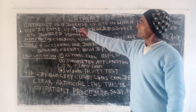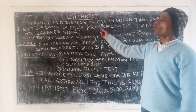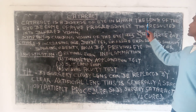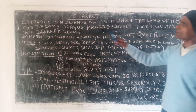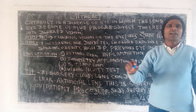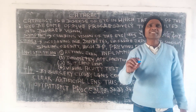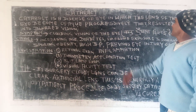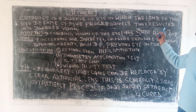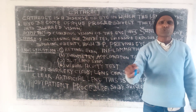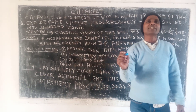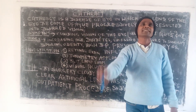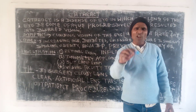Cataract is a disease of the eye. This is a condition where the lens of the eye becomes opaque. The lens of the eye becomes opaque, resulting in blurred vision — it is not clearly visible.